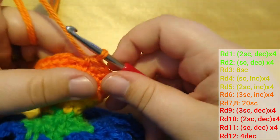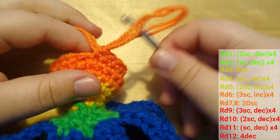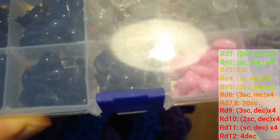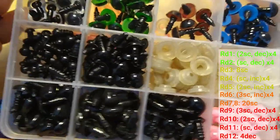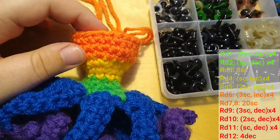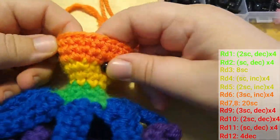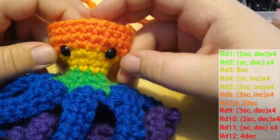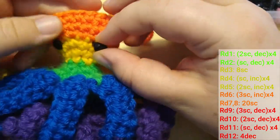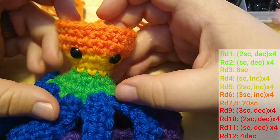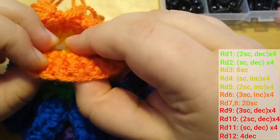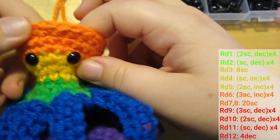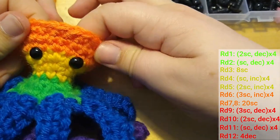Now, before I close up round 8 and switch to red, I need to add the eyes as long as I can still reach inside. These ones should work, so I'm poking them through spaces in the fabric until I'm happy with the position. The backing pieces get pushed down until I feel it clicking and with that the eyes are secure and I can continue crocheting.